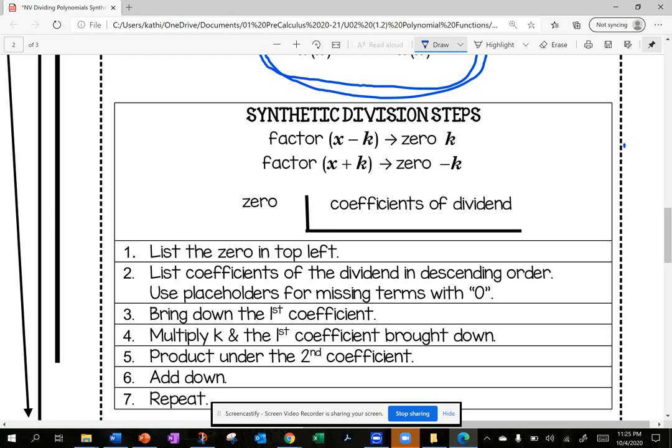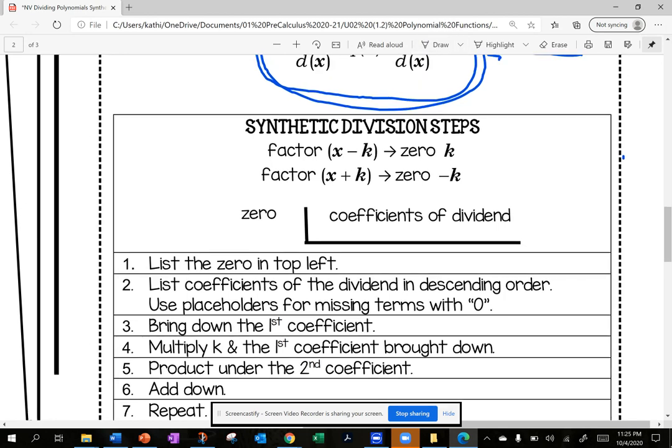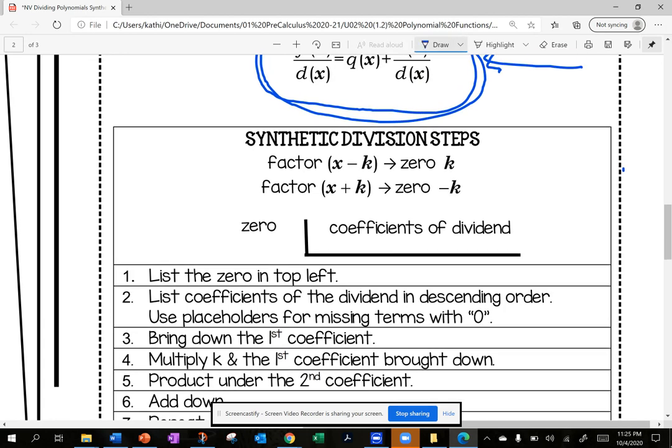When my factor is x minus k, the zero is k. When my factor is x plus k, the zero is minus k. So the factor and the zero are opposite signs. This is really important.